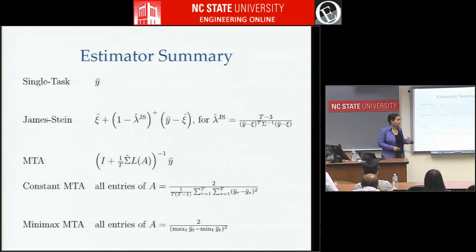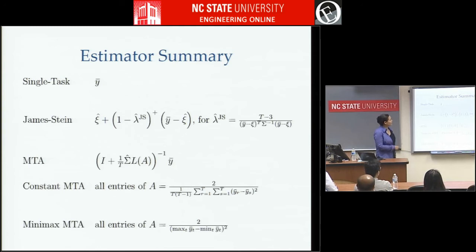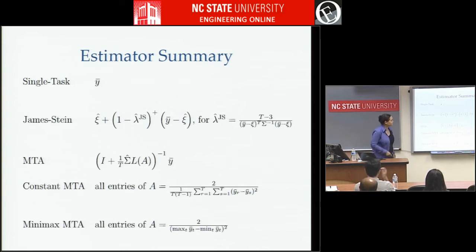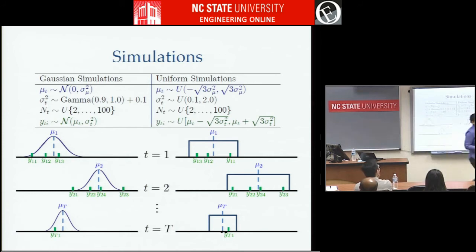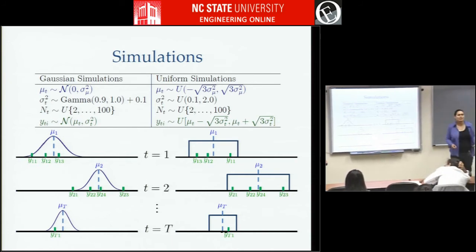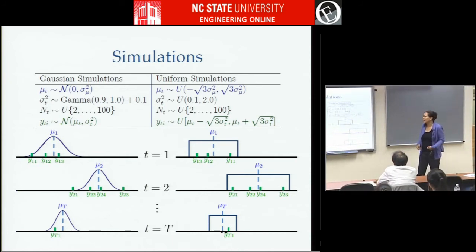Now I'll compare these things in simulation and on real data. Baselines are: single task sample averages, James-Stein estimation using the best variant we could find, and multitask averaging with the closed-form solution — choosing A either as 2 over the pairwise differences (good on average) or in the minimax sense. The simulations were designed to be really random to mimic reality while allowing statistical significance with lots of trials.